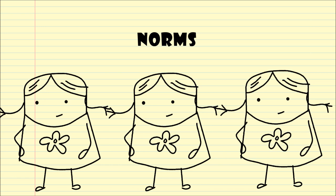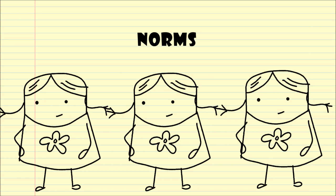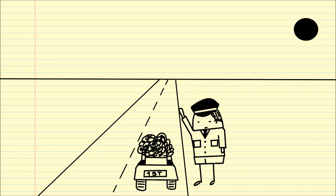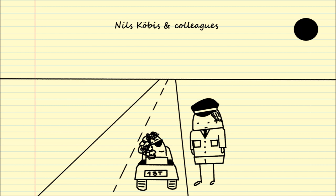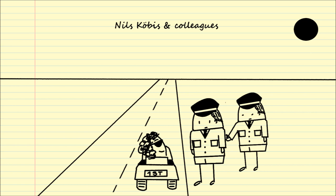The third important insight is the role of norms. Norms describe what people consider to be the normal thing to do in a specific situation. Norms are especially important for social dilemmas that involve large numbers of people. If a police officer considers accepting a bribe a normal practice, chances are he or she will accept one. Nils Kobis and colleagues from the VU show that when people face a social dilemma of corruption, this is exactly what happens — people are corrupt because they think everybody else is doing it.